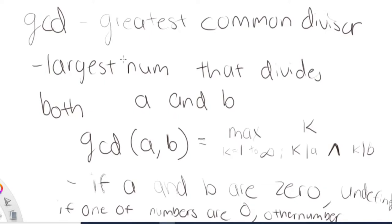Sometimes you need to find the greatest common divisor of two numbers. What is the GCD? It's basically the largest possible number that divides both A and B. When I say A and B, it's just your two numbers — this is your A, this is your B. So the GCD of these two numbers A and B is just the largest possible number that divides both of them.